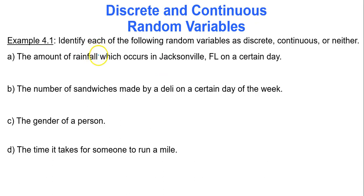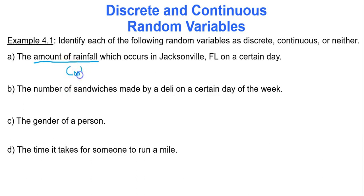Let's identify each of the following random variables as discrete, continuous, or neither. The amount of rainfall in Jacksonville, Florida on a certain day — rainfall is measured in inches and can take decimal values to as many decimal places as desired, so it is continuous. The number of sandwiches made by a deli on a certain day — those are whole number values, so that's discrete.